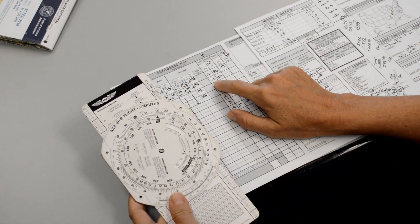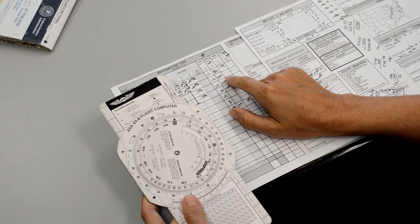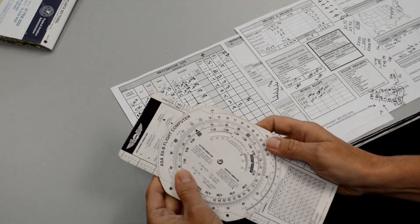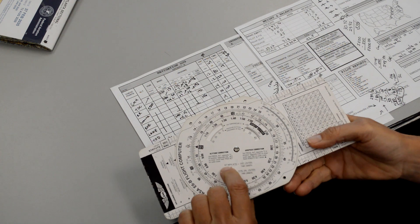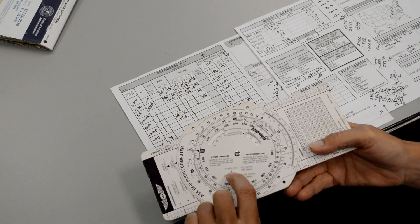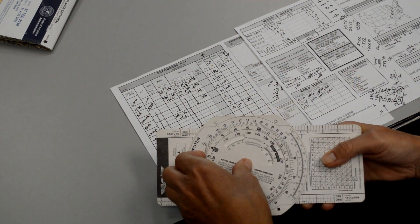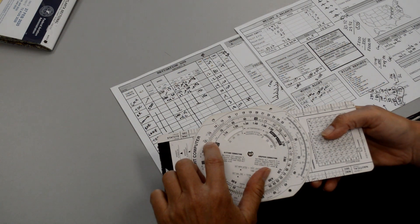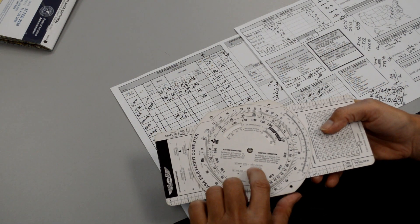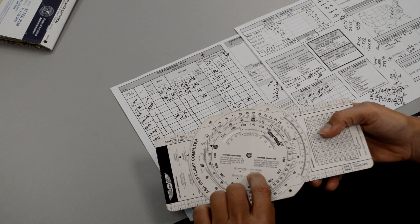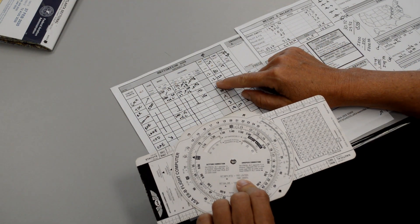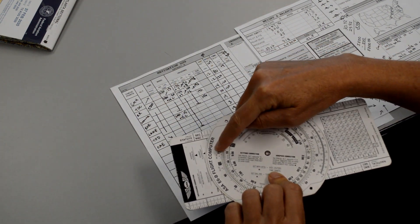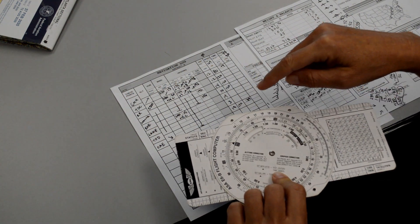So if we know distance and speed, how do we get time? We use our little formula right here, and it says to put the pointer on our speed. So it's actually still on 120 from the last time we used it. And then what do we know? Do we know distance or time? Well this time we know the distance, so we find that on the outer scale.